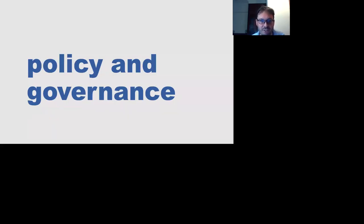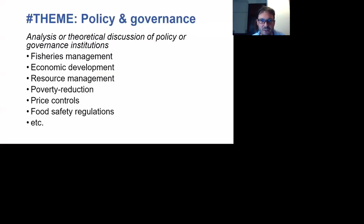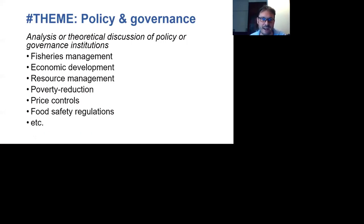Policy and governance is the next theme. Articles under the policy and governance theme tend to address the governance of fisheries, the governance of trade, the governance of prices, and the governance of food safety — through the effects of regulations, laws, and formal and informal mechanisms on the production and distribution of dried fish.